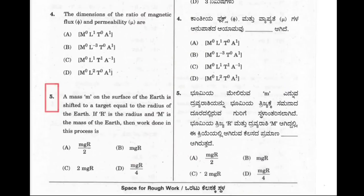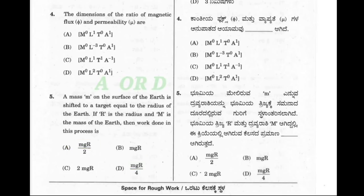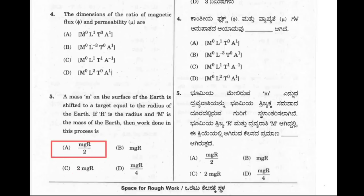In this question, the probability of the correct option being option A or option D — both are having a similar numerator. Now to decide the correct answer, we take the help of other options. The number 2 is repeated more than other options, so this supports option A. Therefore our correct answer will be option A.